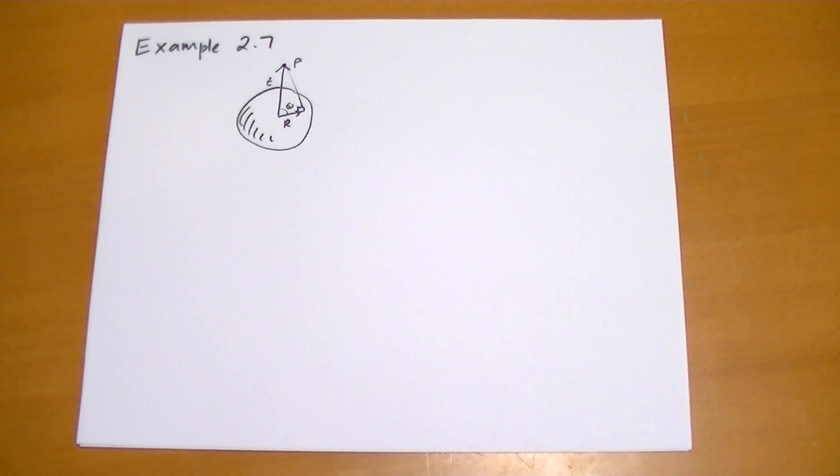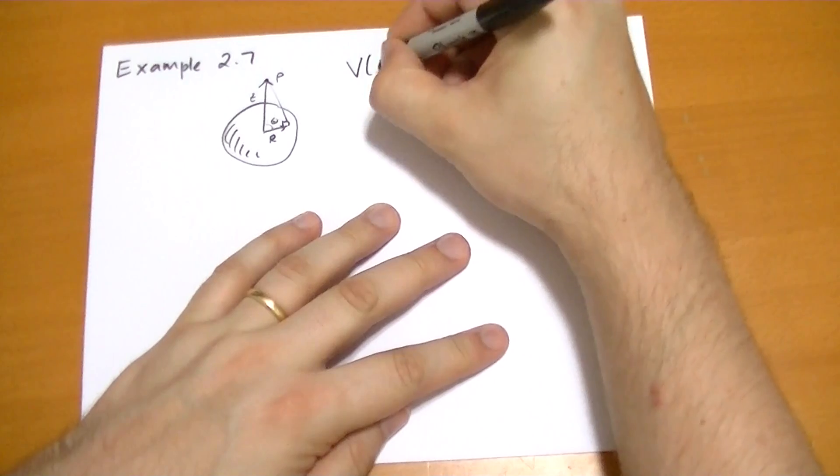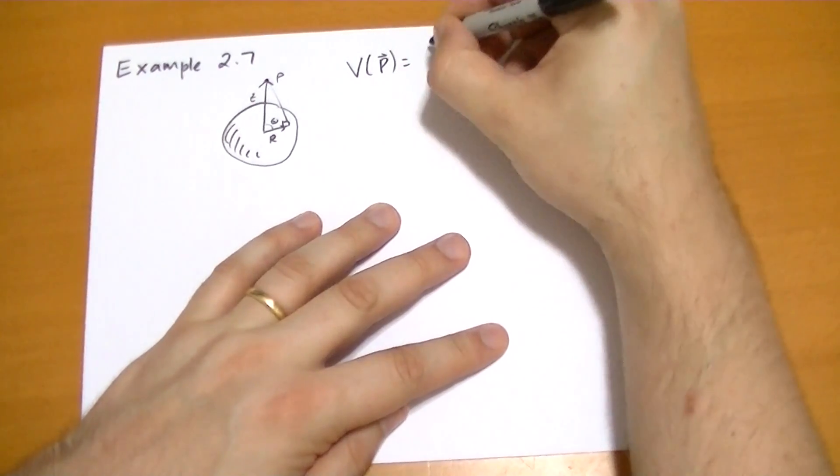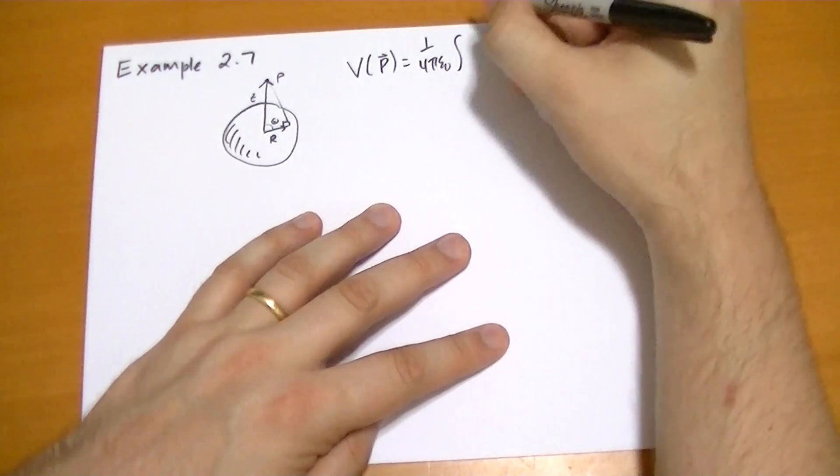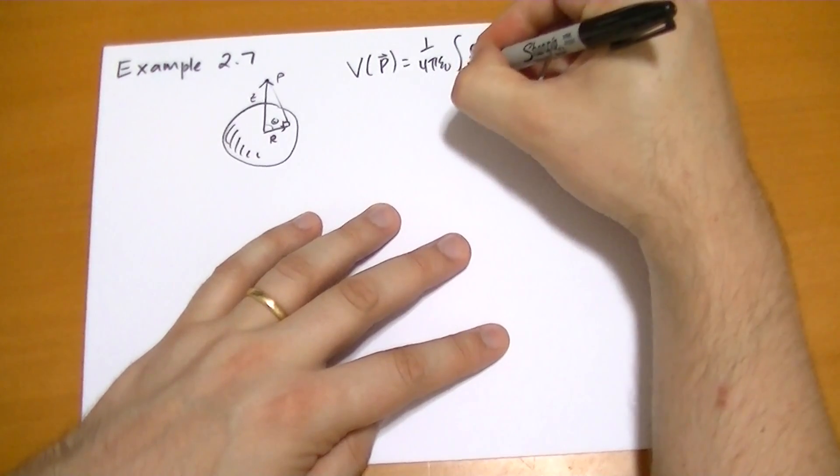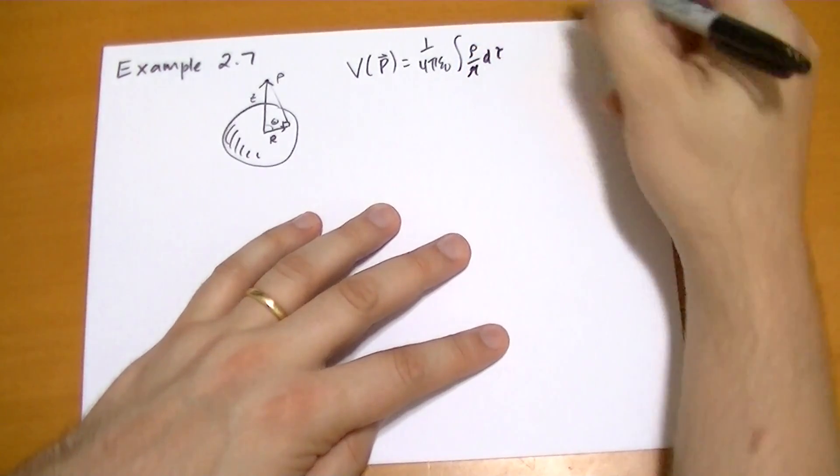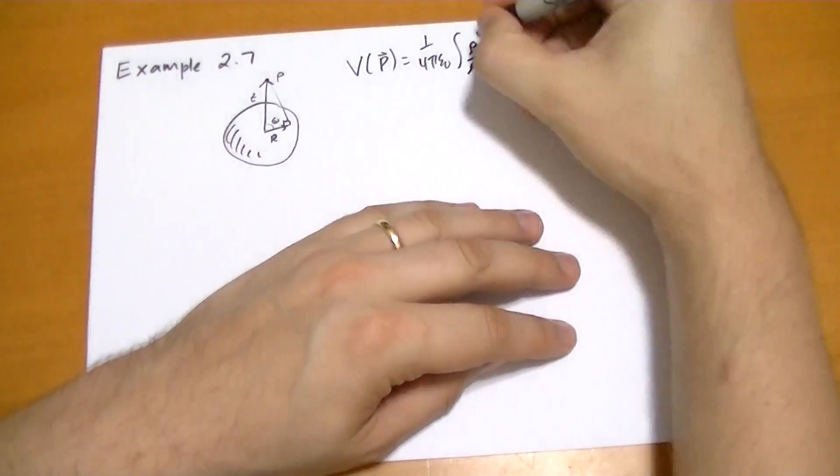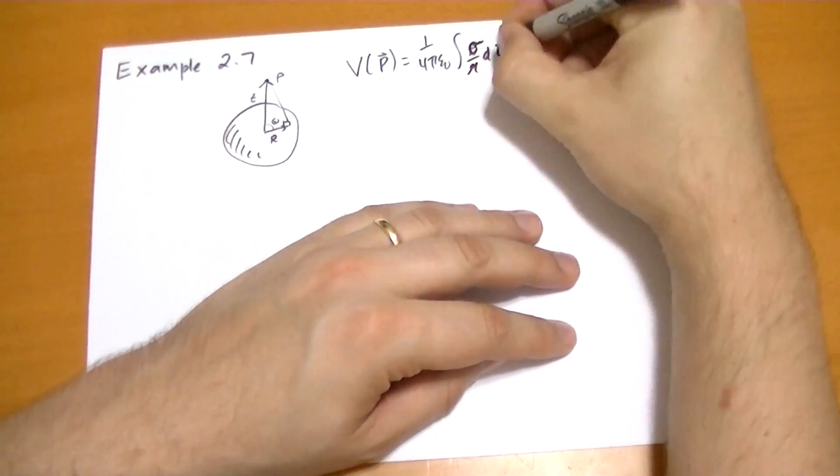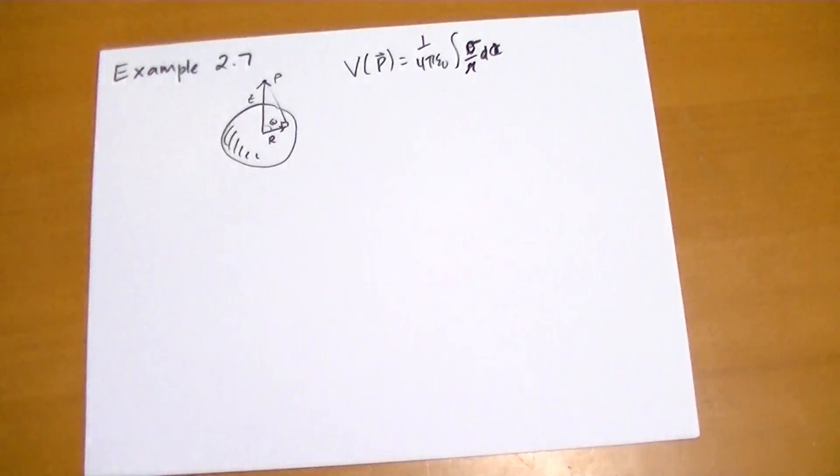But we're going to do it this time using that new formula we just discovered. The potential at a point P is equal to 1 over 4 pi epsilon naught integral over sigma dA, because we're using a surface, not a solid volume.